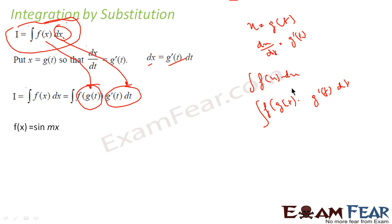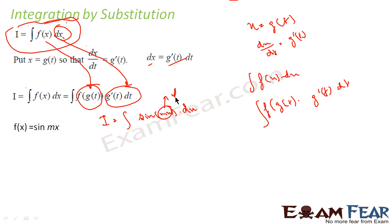Let's take the example where f(x) equals sin(mx). I know the integration of sin(x), but I don't know the integration of sin(mx). So I will be finding the integral of sin(mx) dx. I know what the integration of sin(t) is, but I don't know sin(mx). So let me assume mx as t, because sin(t) I know — this will become sin(t). So let's assume mx equals t.